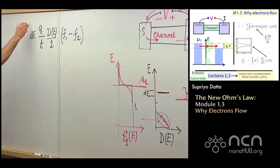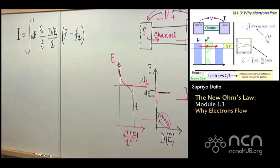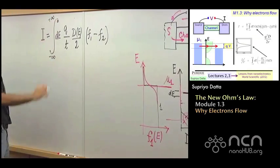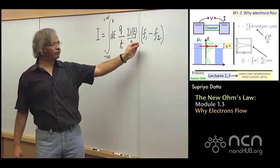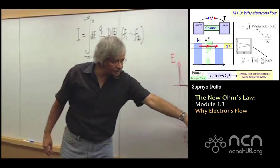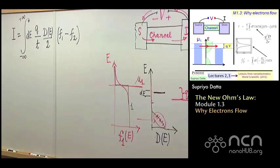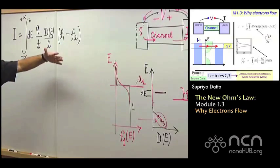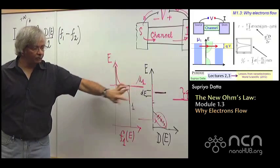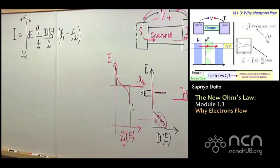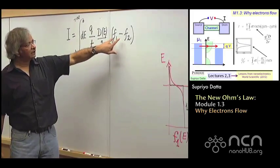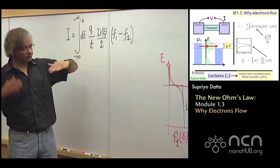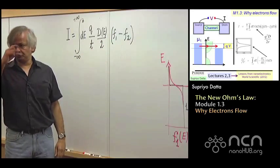And if I want the total current, this is the current through an energy, small energy range dE. Now, if I want the total current, then all I have to do is integrate this all the way from minus infinity to plus infinity, all levels. Of course, the main contribution to this integral will only come from that energy range where F1 is different from F2. So you go way down in energy someplace here, it won't contribute to the integral at all because F1 will be equal to F2. Both will be 1. You go way up some place, both are zero. Again, nothing contributes. Main contribution will come right around here where F1 is different from F2 as we had physically argued. So this would be then the mathematical expression for how you would calculate the current, F1 minus F2.